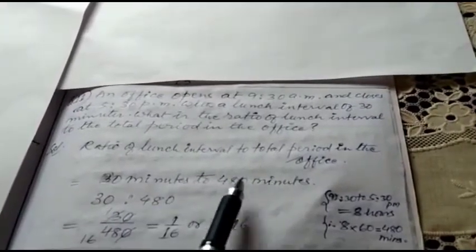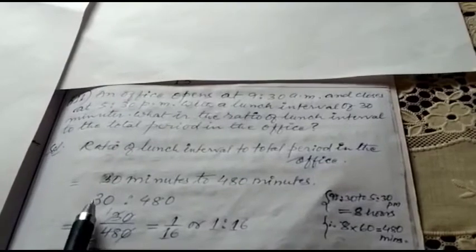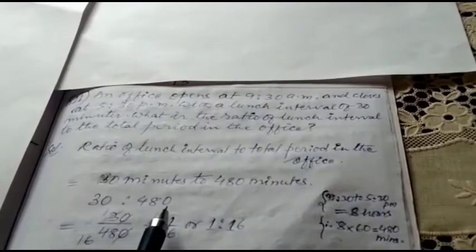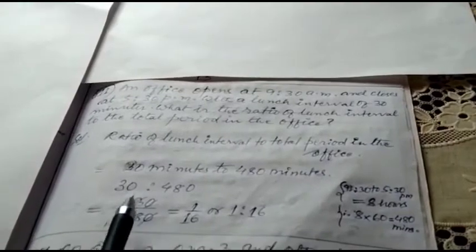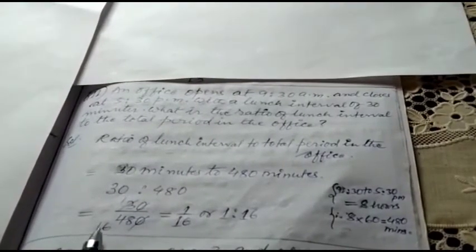So the ratio can be written like this: 30 is to 480, 30 by 480 in the ratio fraction form. 30 ones are 30, 30 16s are 480, so 1 by 16, or 1 is to 16.